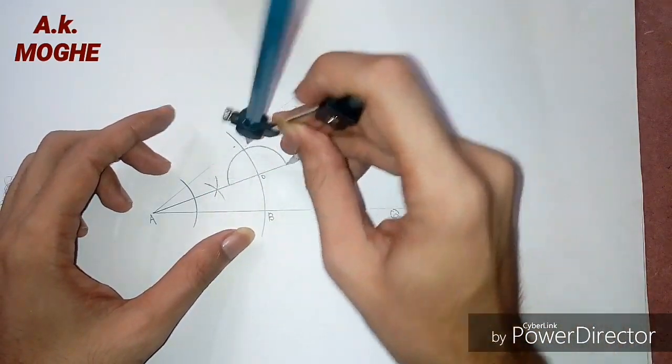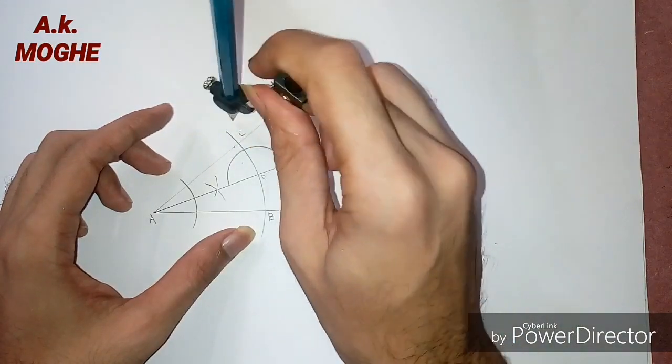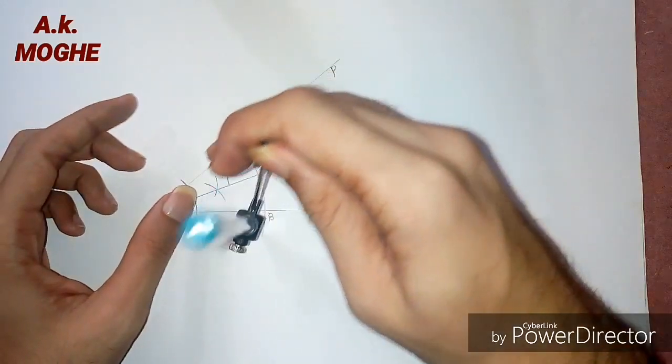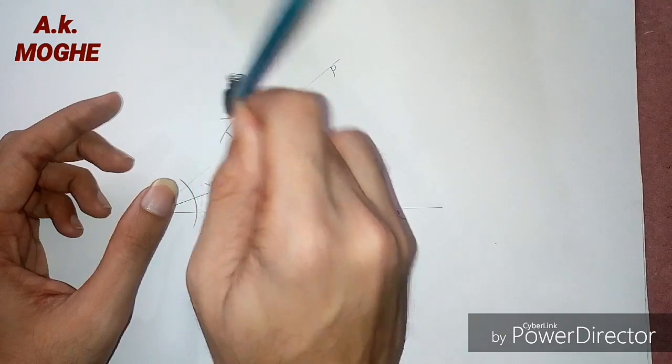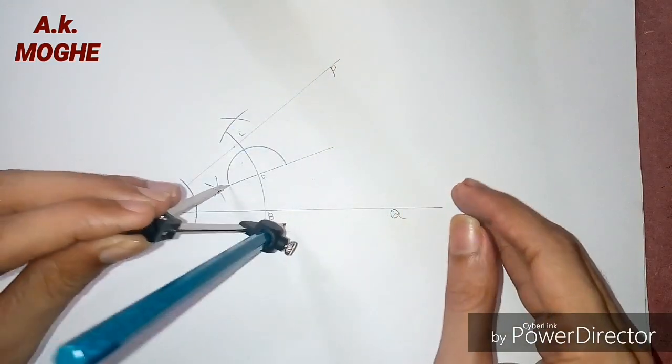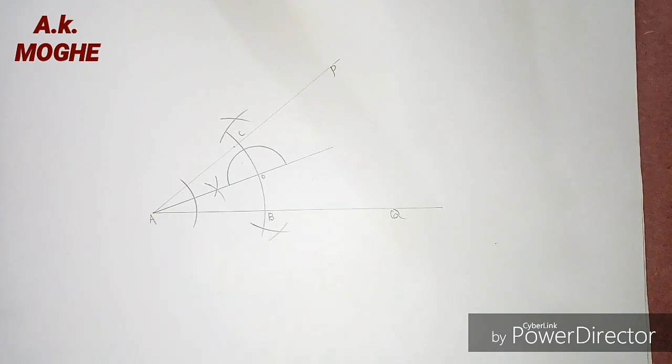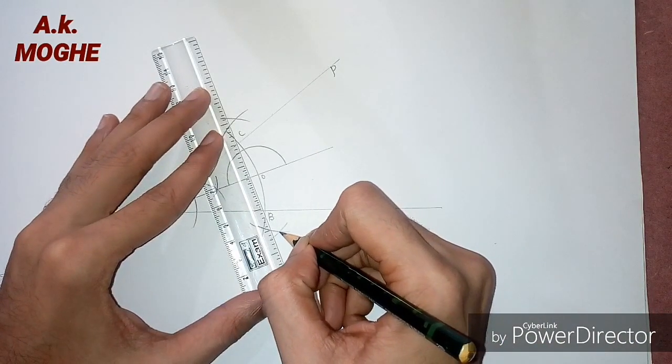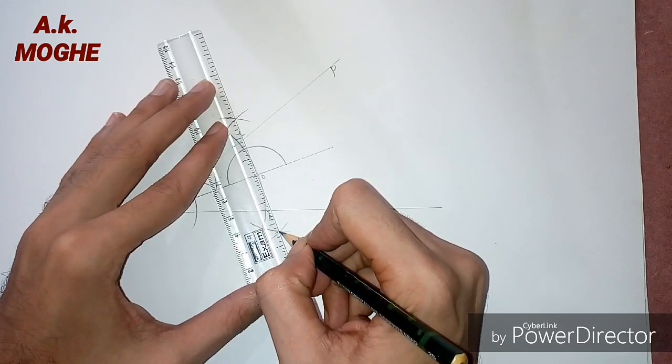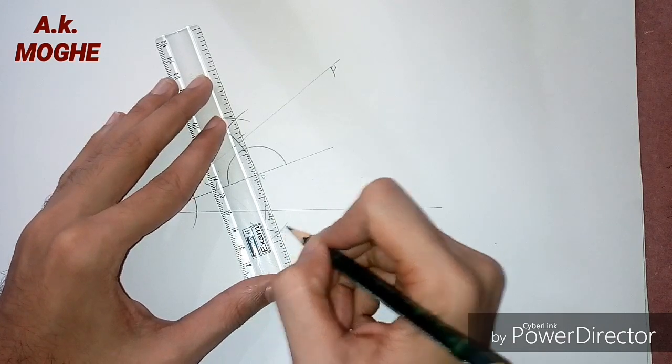And bisect at point 2 using perpendicular bisector method. That is more than half distance on either side of the arc. And we will join those arcs with the help of a scale, so that the tangent to the arc is ready.